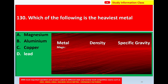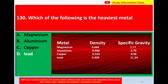Here are the density and specific gravity values for each metal: Magnesium — density 0.064, specific gravity 1.77; Aluminium — density 0.098, specific gravity 2.70; Copper — density 0.323, specific gravity 8.96; Lead — density 0.004, specific gravity 11.344. Based on the specific gravity column, lead is the heaviest metal. For question 130, the correct answer is Option D: Lead.